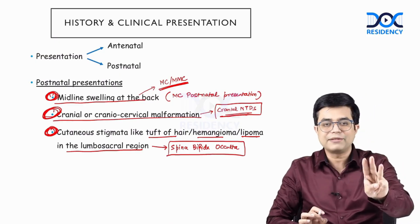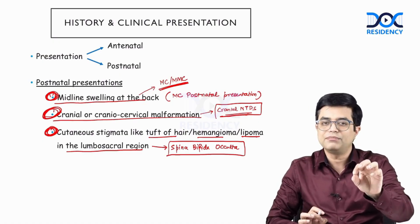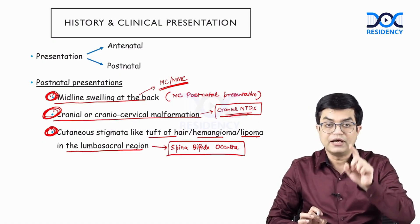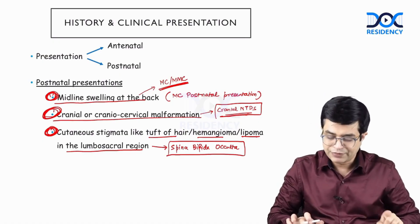These are the three types of presentation you can find in a patient with a neural tube defect, and these will be your chief complaints in the question.